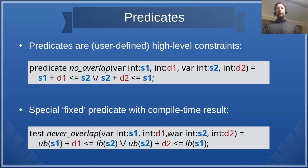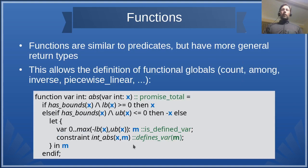Predicates. Predicates is what helps you to create structure in your model, to reuse code by creating new high-level constraints. For example, no overlap of two tasks. There is a fixed version of predicates with compile time results. If in the definition of the predicates you use just constants, in this case bounds on the variables, then it's compile time.